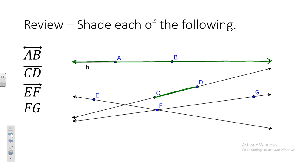What does this symbol mean? Ray — Ray EF. Shade ray EF on your paper. Where did you start your shading? At E. Which direction did you go? Toward F. We only include endpoint E and head in the direction of F. We don't include anything to the left of E, because that is ray EF.